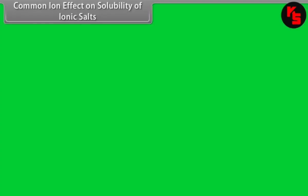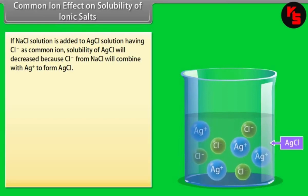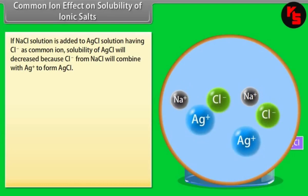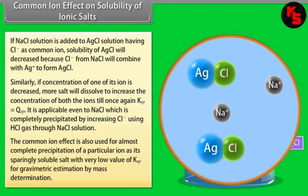Common Ion Effect on Solubility of Ionic Salts. If NaCl solution is added to AgCl solution, the common Cl⁻ ion causes the solubility of AgCl to decrease because Cl⁻ from NaCl combines with Ag⁺ to form AgCl. Conversely, if the concentration of one ion is decreased, more salt will dissolve until Ksp = Qsp again. This principle is used for almost complete precipitation of a particular ion as a sparingly soluble salt with a very low value of Ksp, useful for gravimetric estimation by mass determination.